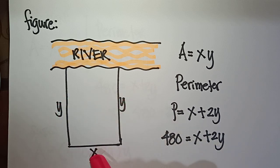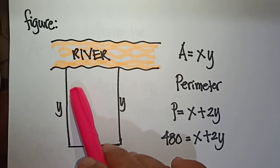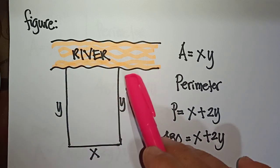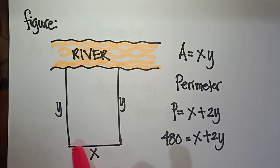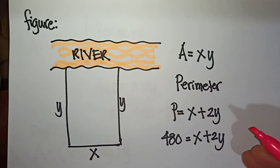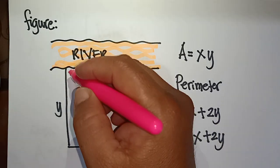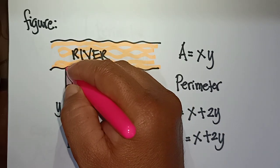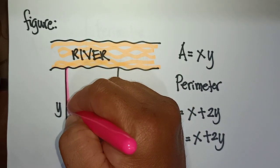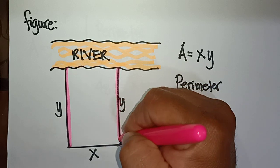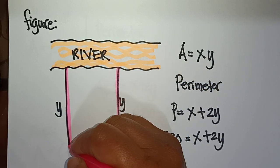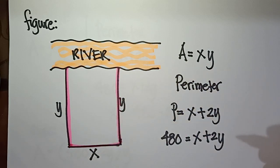In the figure, the side adjacent to the river needs no fencing. We label one dimension as y and the other as x. The perimeter we consider is only three sides: one x and two y sides.